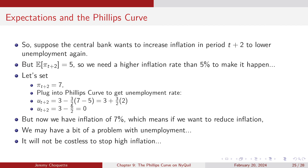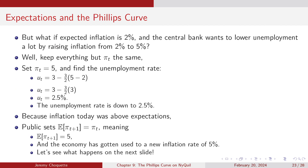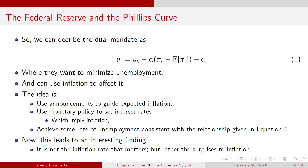Going back to equation 1: if you increase inflation above expected inflation, unemployment falls. What happens when you reduce inflation below expectations? Unemployment increases. So it's not costless to stop high inflation.